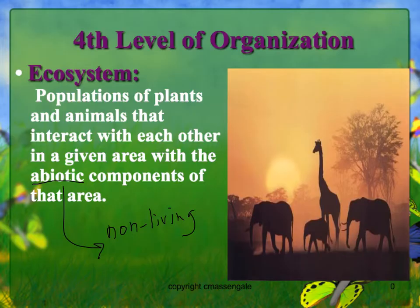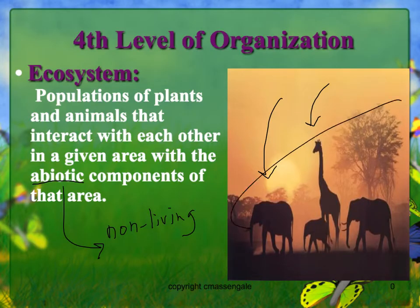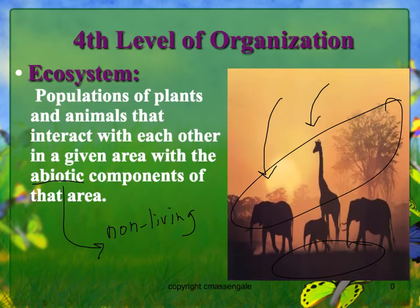So we have all of our populations — a population of elephants, population of giraffes, the trees, the grass — but we also have the non-living things like the sunlight, the wind, the dust, the water. All of those things interacting are called an ecosystem. That's the fourth level of organization within the biosphere.